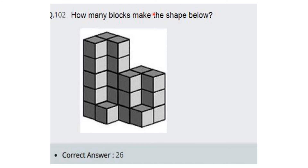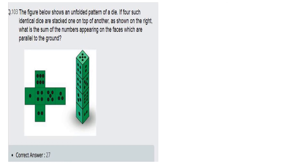How many blocks make the shape below? This is the counting section. 1, 2, 3, 4, 5 — five cubes in that section. Then counting: 1, 2, 3 — 5×3 is 15, then 16, 17, 18, 19, 20, 21, 22. Then 25, 26 — so total 26 blocks... continuing to 27, 28. Total: 28 blocks.